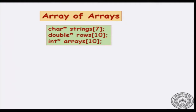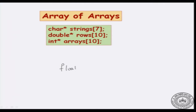In this video, we will look at the last possibility with respect to multidimensional arrays and pointers. This is known as an array of arrays. In order to understand this, let us look at something we are comfortable with. If I had just a float array of 10 elements, I will say that ARR is an array of 10 floats. So this is how I would read it.